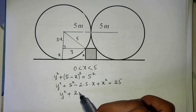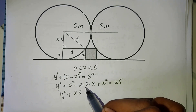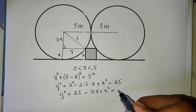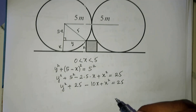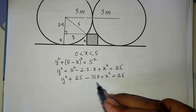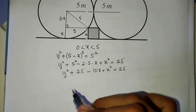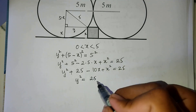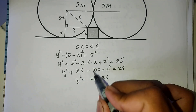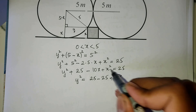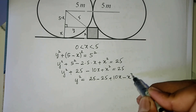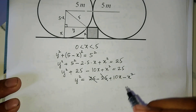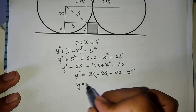So we have y squared plus 25 minus 10a plus a squared equals 25. Moving terms to the right-hand side, we get y squared equals 25 minus 25 plus 10a minus a squared, which simplifies to y squared equals 10a minus a squared.